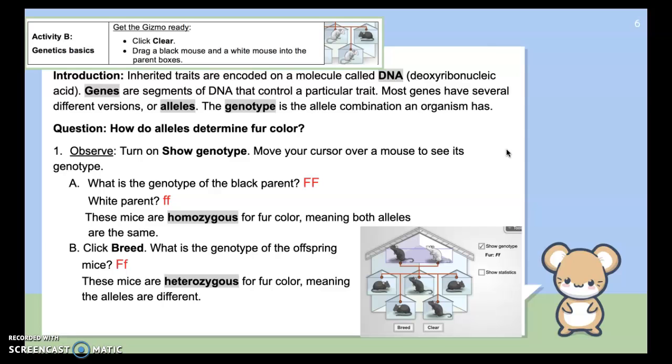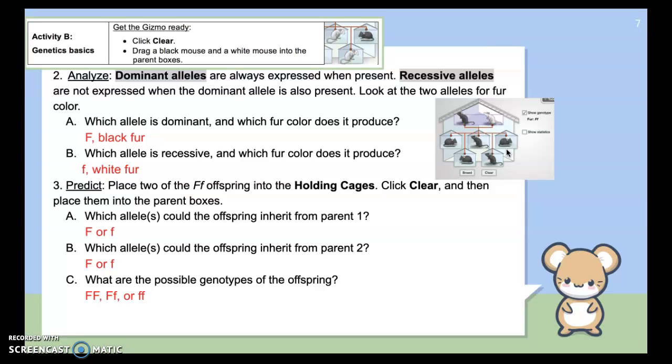So it asks you to click on breeding them. You're going to take a pure black parent and a pure white parent. And when you breed them, it produces offspring that are hybrid. They have the genotype big F, little f. That means you have one of each allele. So heterozygous, hetero means different. You have different alleles, one dominant and one recessive.